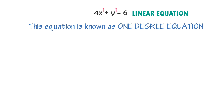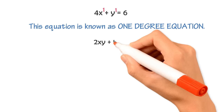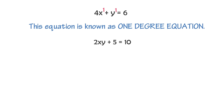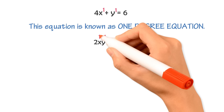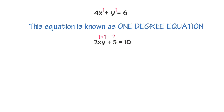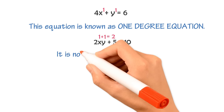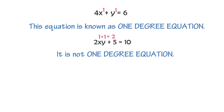Let me give you another example: 2xy plus 5 is equal to 10. This equation has also three terms: 2xy, 5, and 10. The term 2xy is considered as one term. The power of x is 1 and the power of y is also 1. Hence, 1 plus 1 is equal to 2. Thus, the highest power of this equation is 2. Therefore, it is not a one-degree equation, and hence it is also not a linear equation.